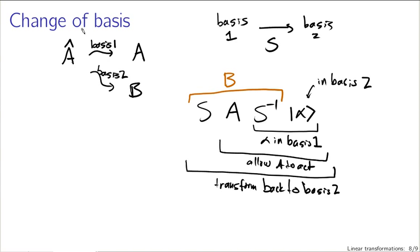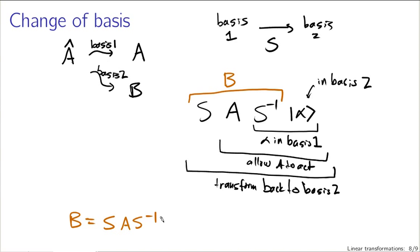So B, the representation of operator A in basis two, is equal to S times A times S-inverse, for some transformation S that connects the two bases. If I treat all three of those operations as matrices, I end up with a matrix product that gives me the representation B — telling me how A acts in basis two.